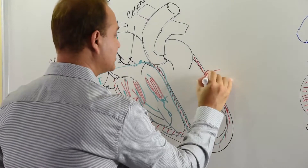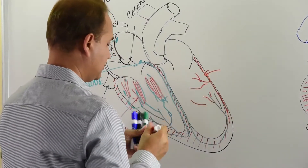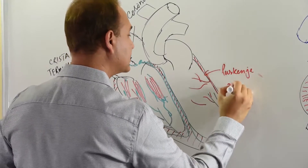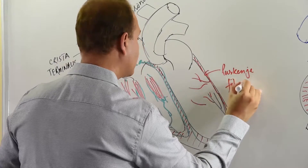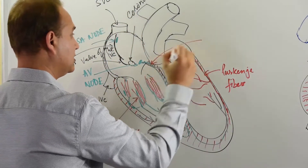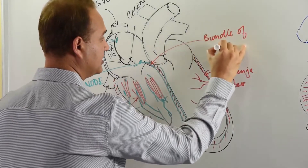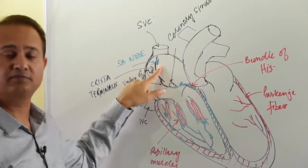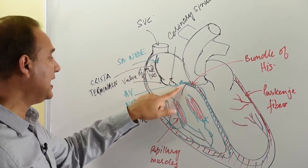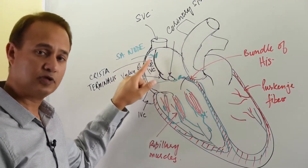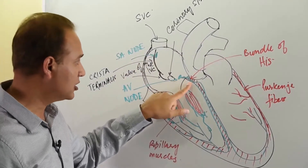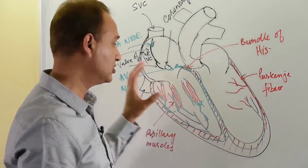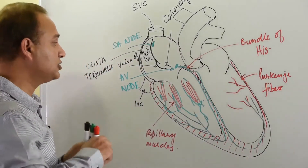The conduction system is comprised of: the SA node, which is the fastest pacemaker and the normal pacemaker under normal conditions; the AV node, which is the second fastest pacemaker and takes over if there is a problem with the SA node; the bundle of His, located in the interventricular septum; and finally, the Purkinje fibers, which supply the ventricle.